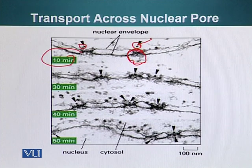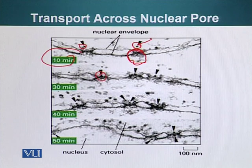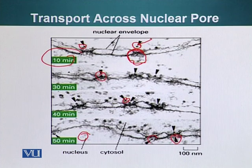After 30 minutes, you can see some of these gold particles trying to get through the nuclear pore. However, at 40 to 50 minutes, you can see — the arrows point to the gold particles — they are actually entering inside and are present inside the nucleus. So here is a visual graphic example of nuclear transport done in a time-lapse manner.